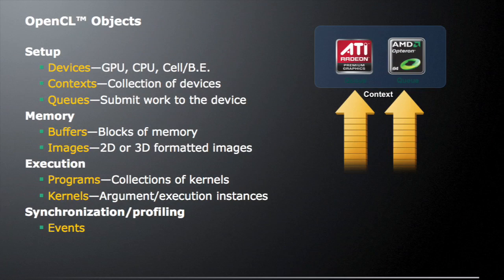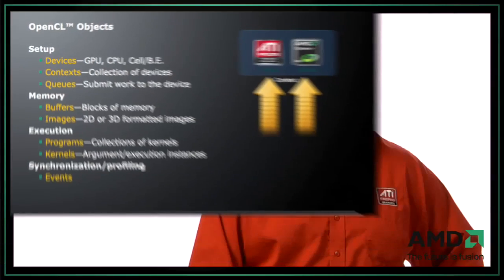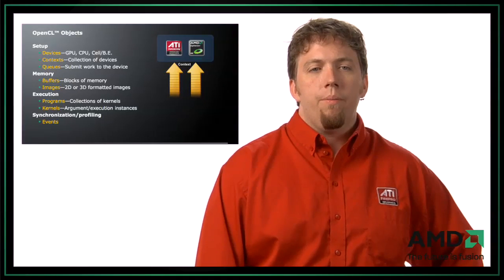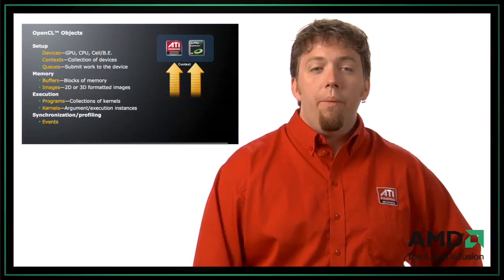Let's talk a little bit about OpenCL objects. There are four basic objects. The first are what I'm going to call setup objects — things such as devices, contexts, and queues. Devices are simply things such as GPUs, CPUs, or other OpenCL devices. A context is a collection of devices. And queues let you submit work to the device. You also have memory objects, and there are two basic types of memory objects.